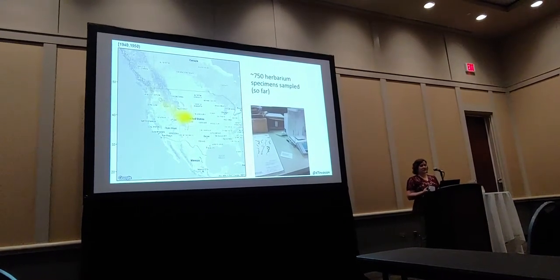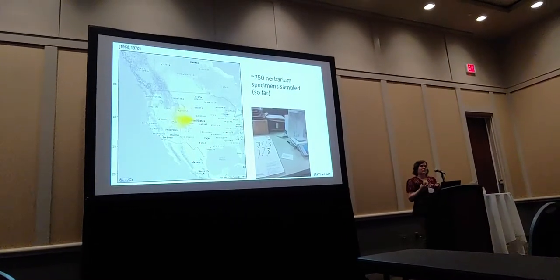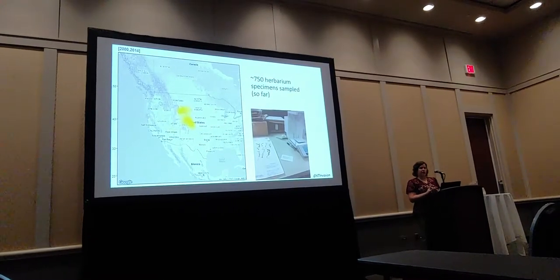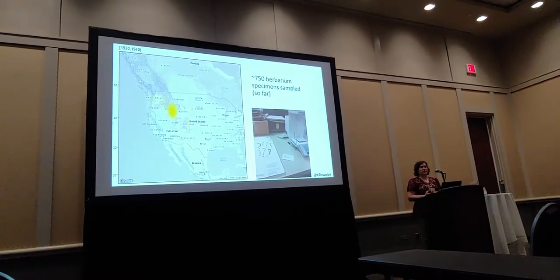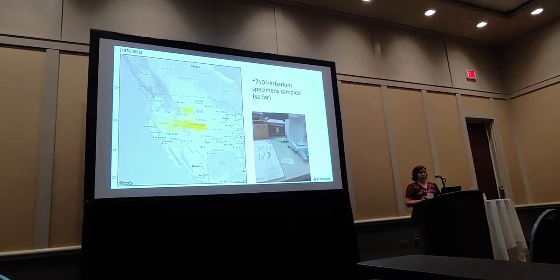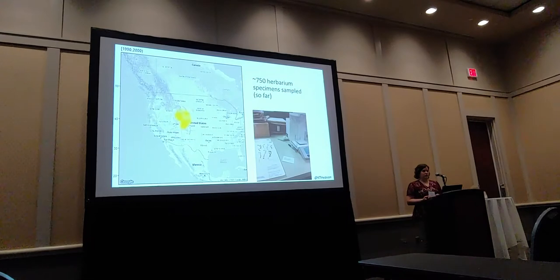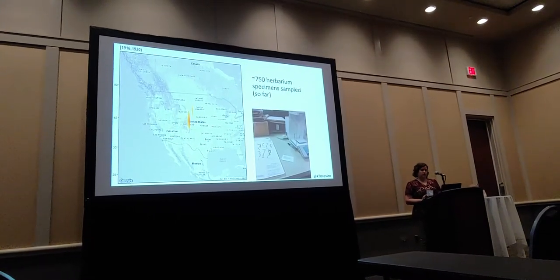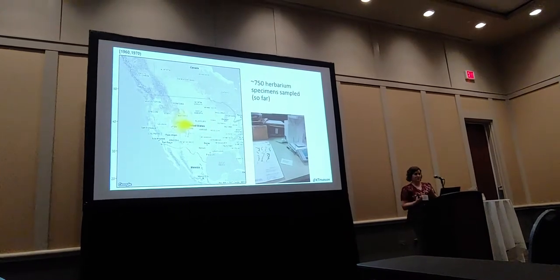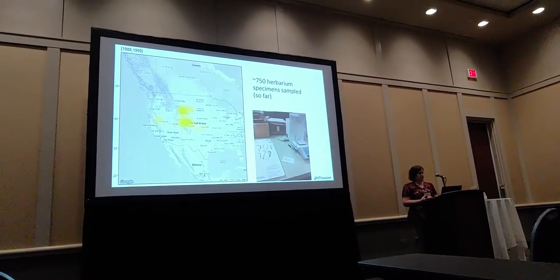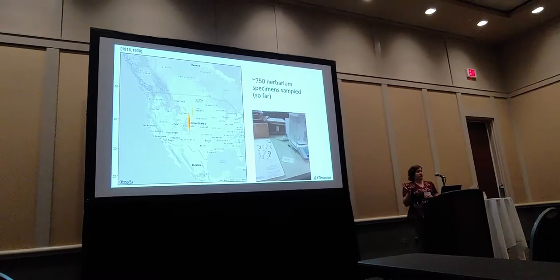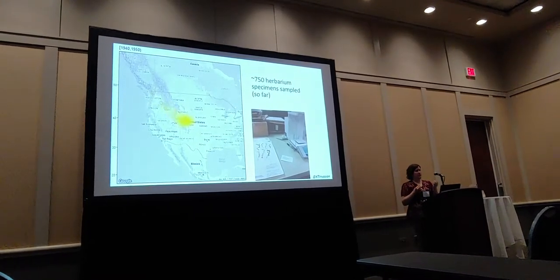Once I had this draft assembly in hand, I could proceed with working with the herbarium specimens. I wanted to see how many herbarium specimens I could actually get my hands on, and it turns out it was quite a lot. With the help of just nine herbaria, I was able to sample leaf tissue from 750 specimens, dating back to the beginning of the invasion, and widely distributed across the western U.S. and parts of Canada. Each of these specimens represents not only a point on a geographic map, but also a point in time and environmental space.